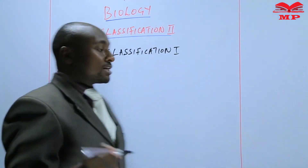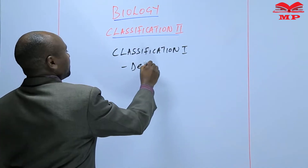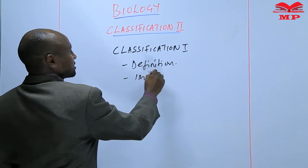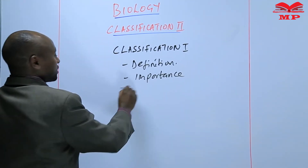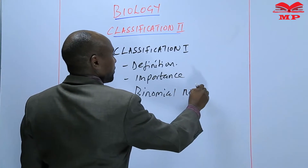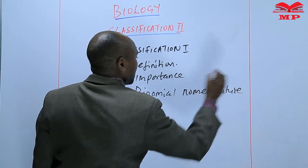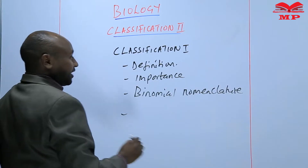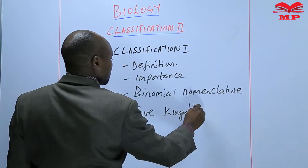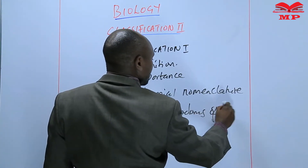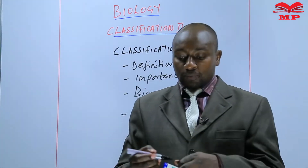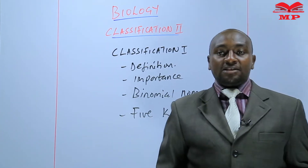First of all, we defined classification. Then we looked at the importance of classification. Then we looked at binomial nomenclature and the rules that are followed. And then we introduced the five kingdoms of taxonomy. So basically, that is what we covered in form one under classification one.